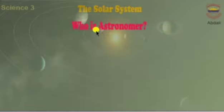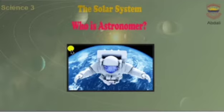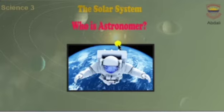Who is an astronomer? An astronomer is someone who studies things in space. As you can see in this picture, astronomers observe and study objects in space.